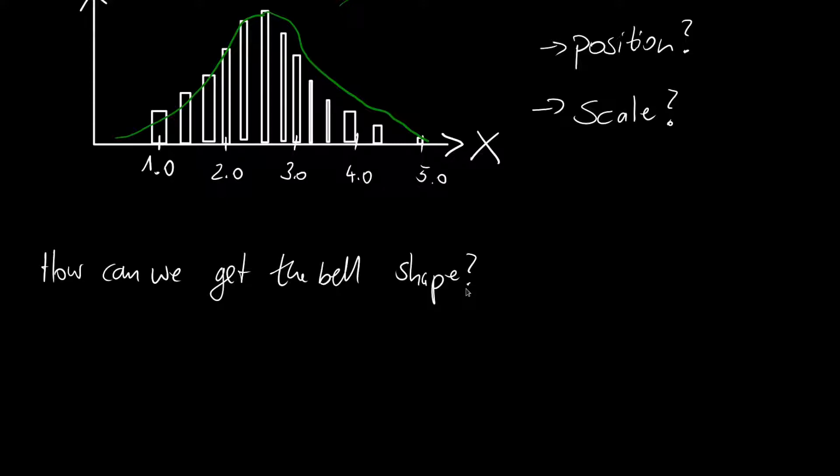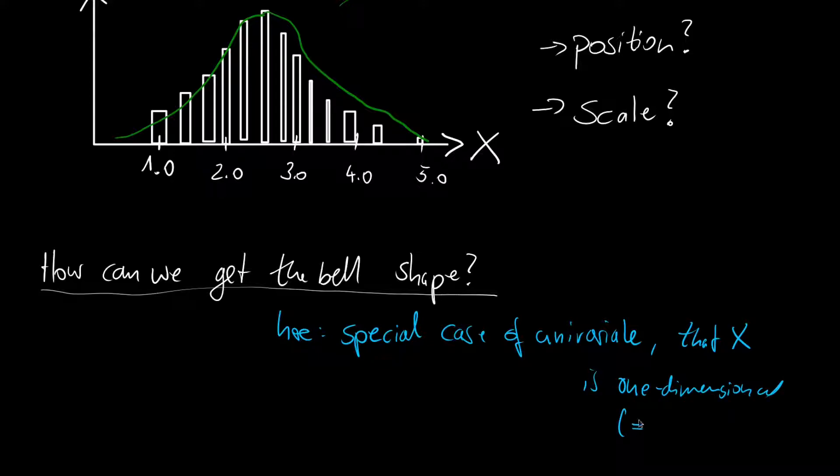And for this let us first make some things clear. And since we're talking about the normal distribution we are talking about a special case. So here we have the special case of a univariate normal distribution. And this simply means that x is one dimensional or in other words it is a scalar.